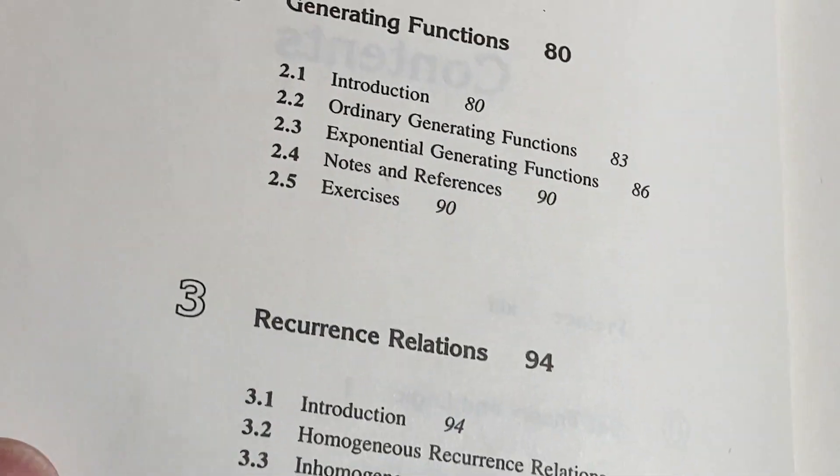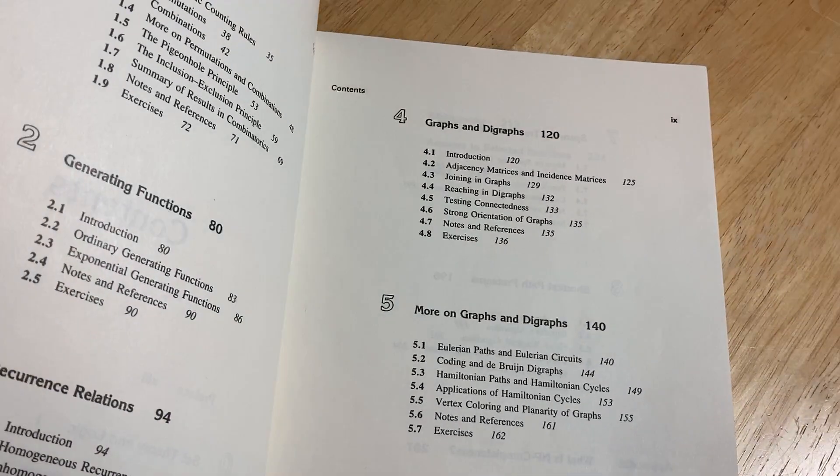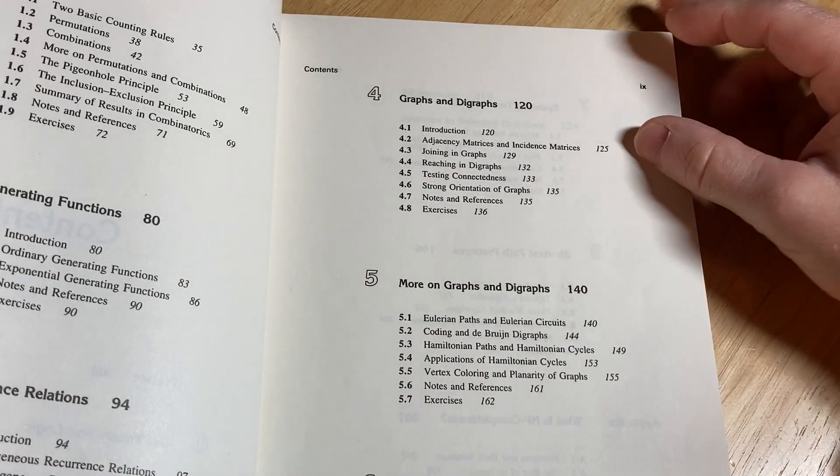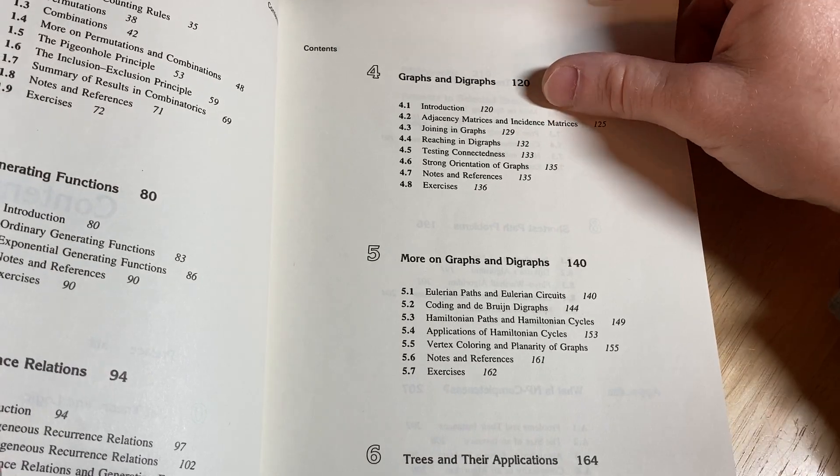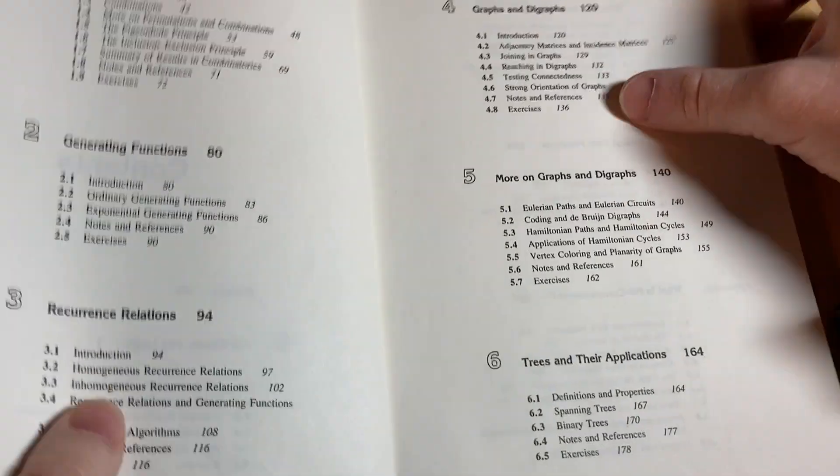Generating functions, recurrence relations, graphs and digraphs. So this is something that you would study in a discrete math class. And you would take that if you were a computer science major in college. You would have to take a discrete math class.